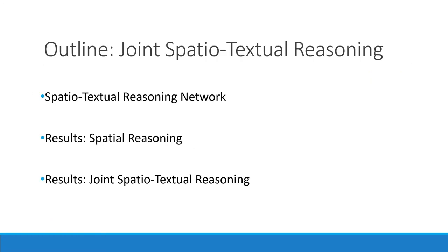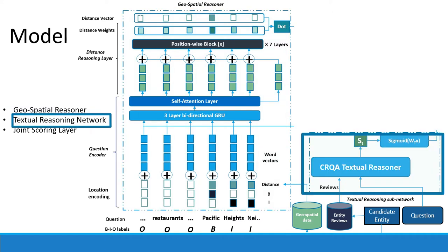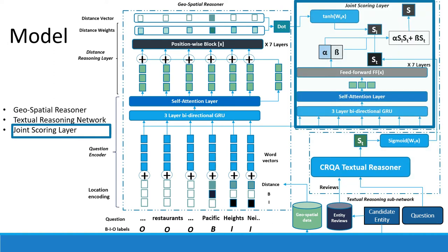I'll begin by presenting our network for spatial-textual reasoning. I will then describe some results on an artificially constructed dataset that requires only spatial reasoning, and then present work on a real-world dataset that requires both spatial and textual reasoning. The network consists of three sub-components: a geospatial reasoner, a textual reasoning network that incorporates information from reviews, and a joint scoring layer that combines both spatial and textual reasoning.